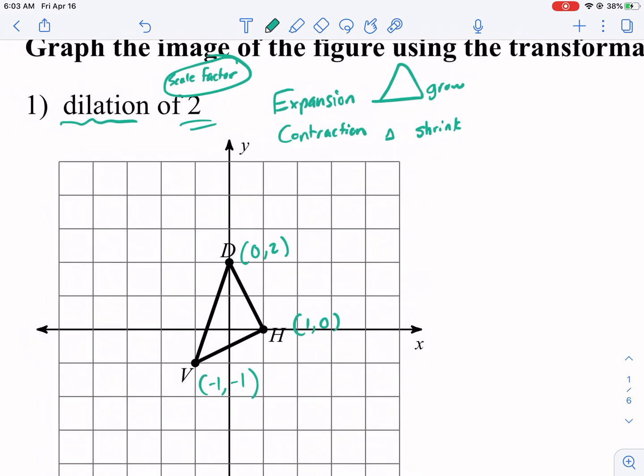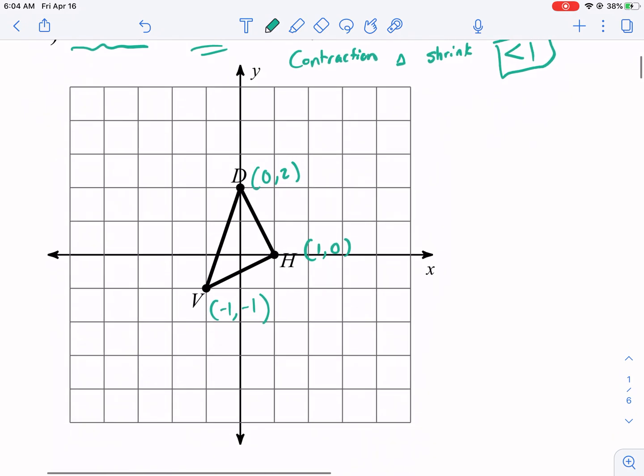So if it's 2, if it's bigger than 1, it's going to be an expansion. And if it's less than 1, it's going to be a contraction. It's going to shrink. If it's 1, that means it doesn't change any size. So let's go ahead and take a look.